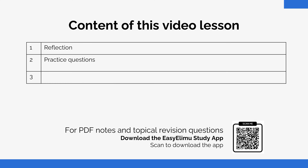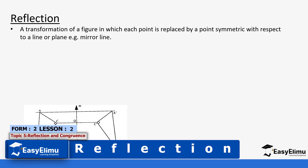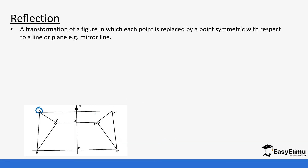Previously we looked at symmetry and we saw different transformations change the shapes, sizes, and distances of different shapes. Today we are going to look at reflection — basically reflecting a certain image in front of a mirror, so we'll have mirror lines in our concept. Reflection is a transformation of a figure in which each point is replaced by a point symmetric with respect to a line or a plane, which we usually call a mirror line. For example, point A is reflected along the mirror line to form point A prime. The distance from A to the mirror line and from A prime to the mirror line will always be equal.